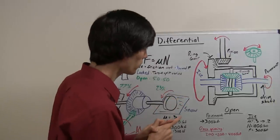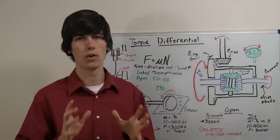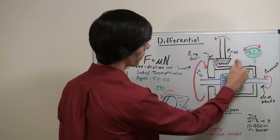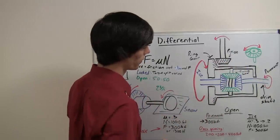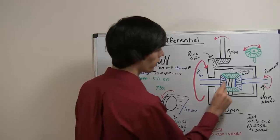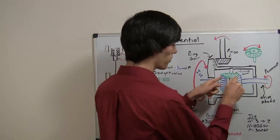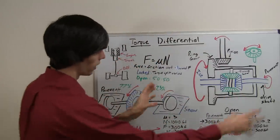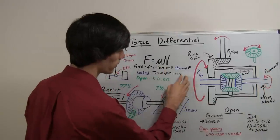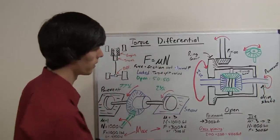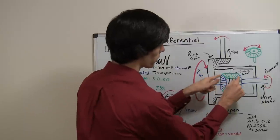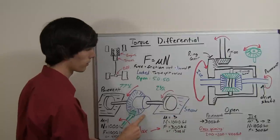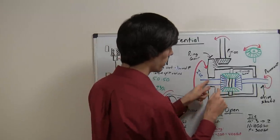Now for the open differential. With an open differential, torque is always even between the two. We know this because the pinion here rotates the ring gear — as we've seen in my differential video — and this pinion gear pushes with equal force against both drive shafts. So we're going to take this and rotate it: we'll have this side on ice and this side on the pavement. The pinion gear is pushing with equal force on both drive shafts.